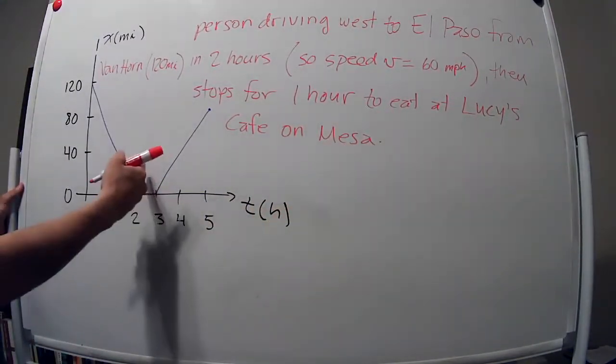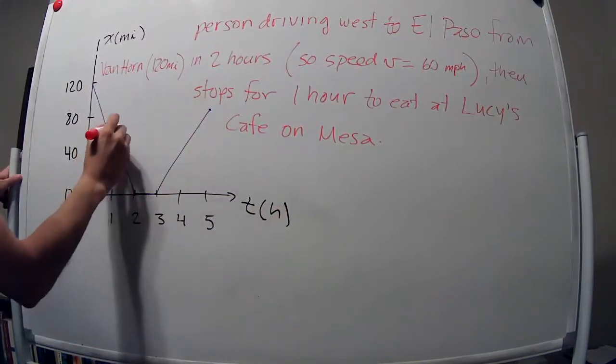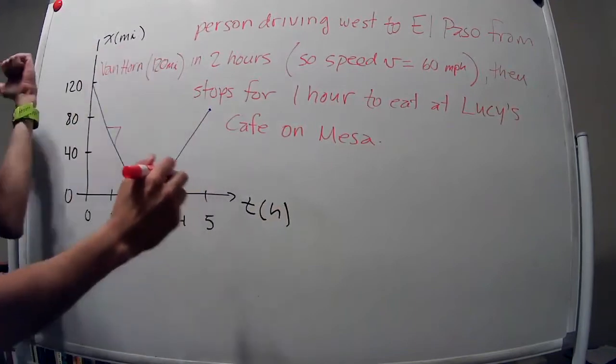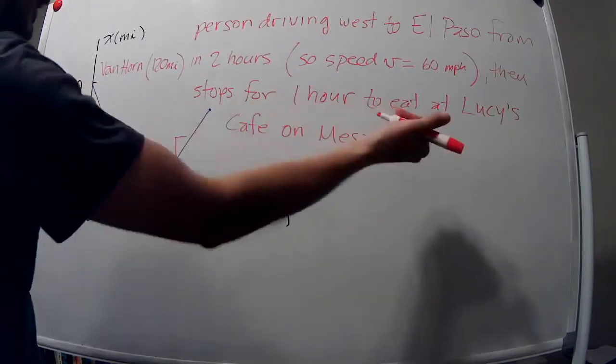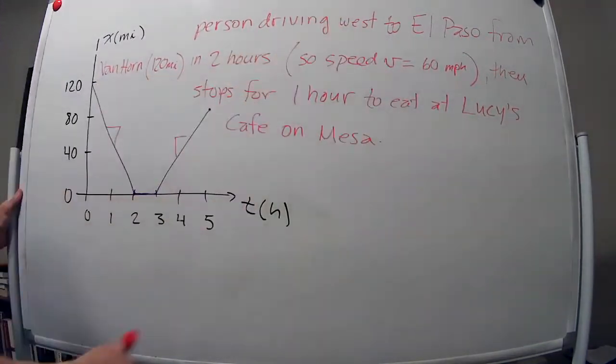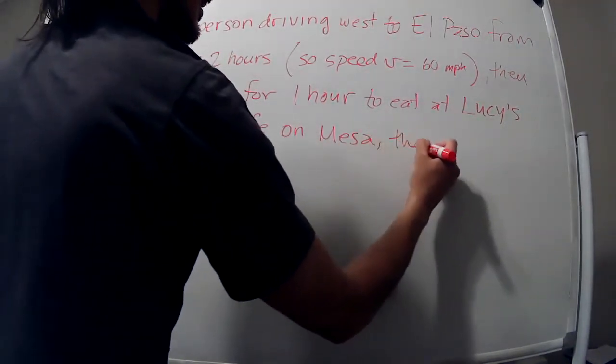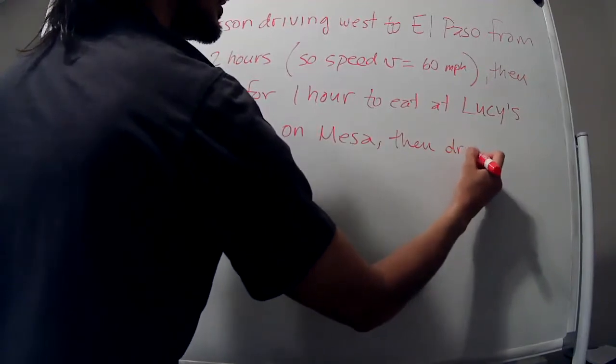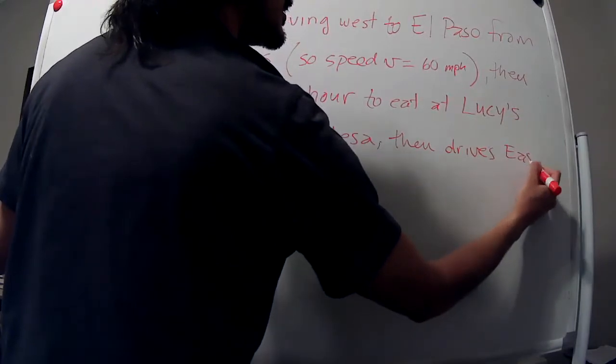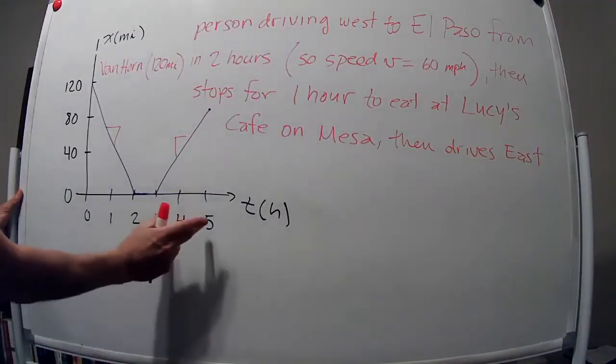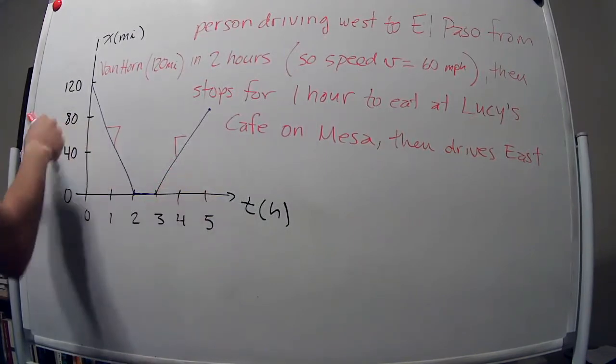And then it's going to go back, right? So here the slope is negative, so it means that the velocity was to the left. But here the slope is positive, that means that the velocity is to the right. So now it's going to go east, right? So then drives east for two hours, but only 80 miles.